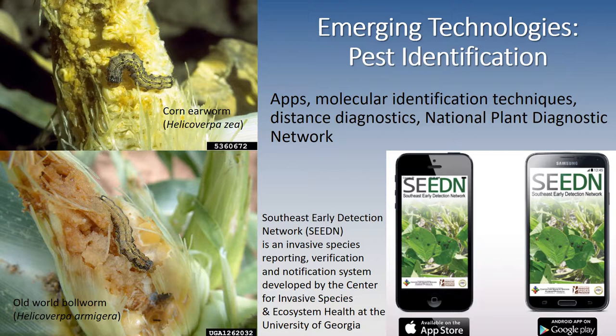We also need to use our pest identification tools — if we don't know what we have, we can't manage it effectively. We have apps, molecular identification techniques, distance diagnostics, and the National Plant Diagnostic Network, all of which aid in pest identification. On the left we have the corn earworm in the upper image, and the lower image is the old world bollworm, which is currently in South America. We hope it stays there because it's been referred to as the corn earworm on steroids.